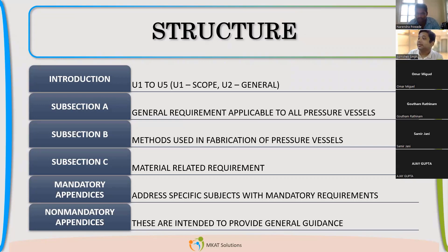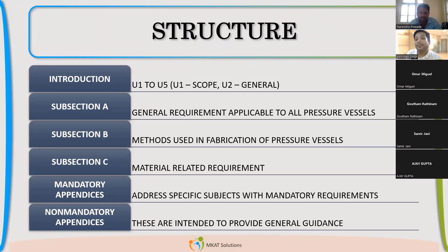The main material types are carbon steel, low alloy steel, and stainless steel — which is actually high alloy steel. These are the major materials used in pressure vessels. Carbon steel and low alloy steel are covered in the same section, which is UCS. So UCS means the carbon and low alloy steel related requirements.